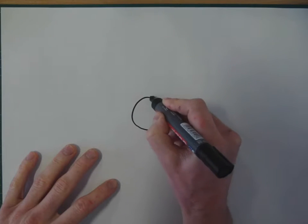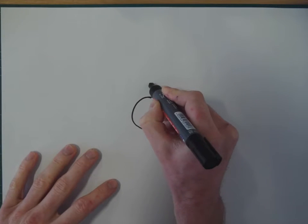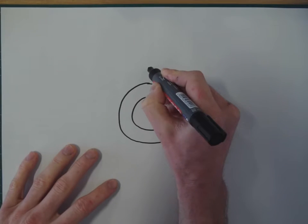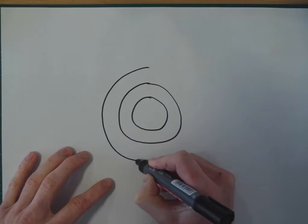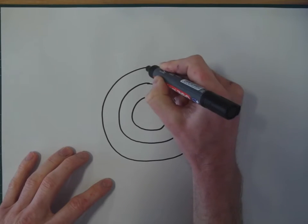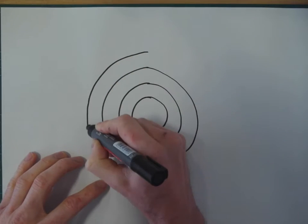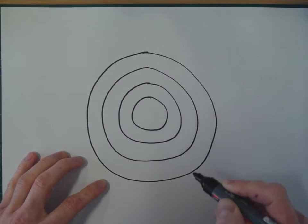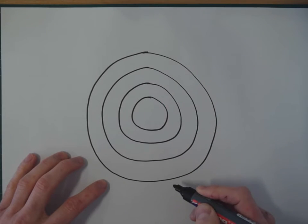So we start off with some concentric circles on your page. Let's see how good I am at drawing concentric circles. There we go. Now it doesn't really matter how many you draw for now.